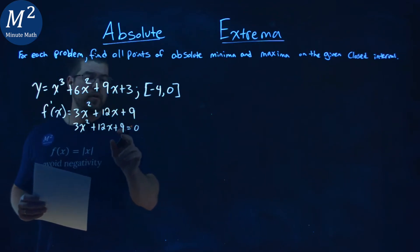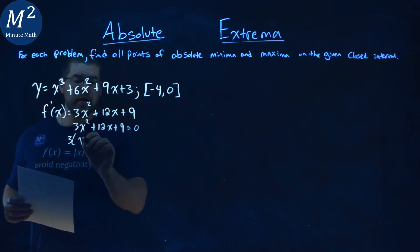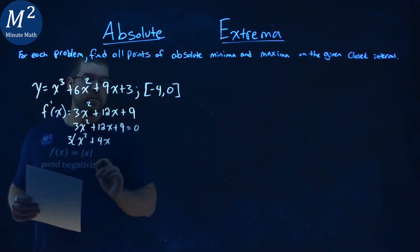From there, we can pull out a 3 from all parts here. 3x squared plus 4x, 3 out of 12 is 4, and plus 3 out of 9 is 3.